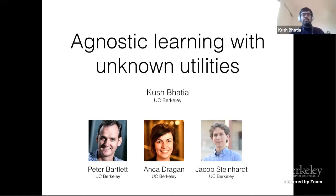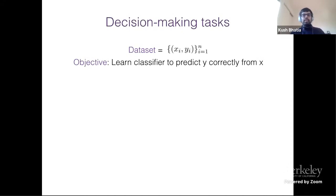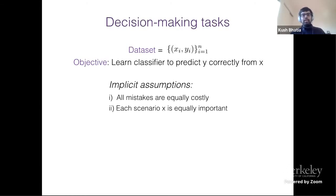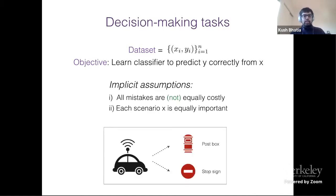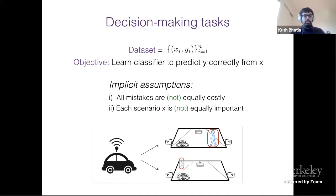Hi everyone, I'm Kush Bhatia, and I'll be presenting our work on agnostic learning with unknown utilities. This is joint work with Peter Bartlett, Anca Dragan, and Jacob Steinhardt. In a classical decision problem, one begins with a dataset of n data points, and the objective is to learn a classifier which predicts labels y correctly from context vectors x. Most works implicitly assume all mistakes are equally costly and each scenario x is equally important. In reality this is often not the case — if you consider a classification system for a self-driving car, the cost of mispredicting a roadside post versus missing a stop sign can be very different. Identifying a person crossing the road is far more important than one walking far away from the roadside.